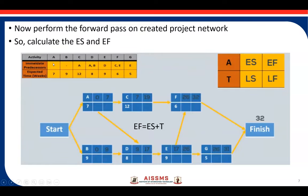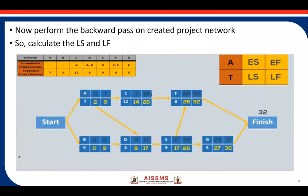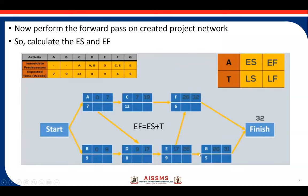In this example, the first activity is A and the initial time is not mentioned, so we assume the start time is zero. The early start for activity A is zero and the early finish will be early start plus duration, that is zero plus seven, so early finish is seven. We calculate early start and early finish for all nodes in the network diagram. At the finish node, the project completion time is 32 weeks.